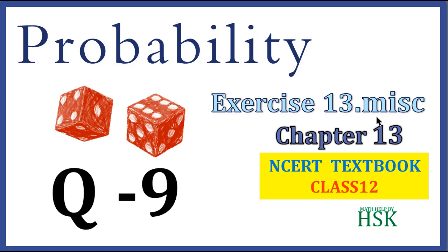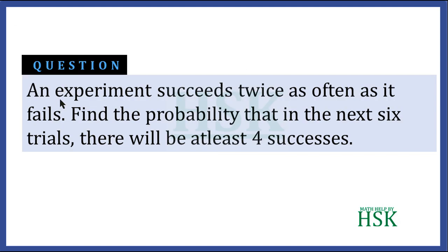This is question number nine of the miscellaneous exercise of chapter 13, that is probability. The question states that an experiment succeeds twice as often as it fails, which means the probability of success is twice the probability of failure. Find the probability that in the next six trials there would be at least four successes.